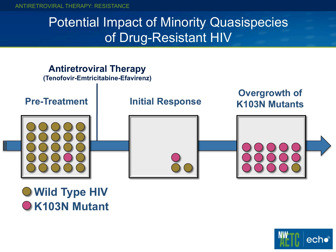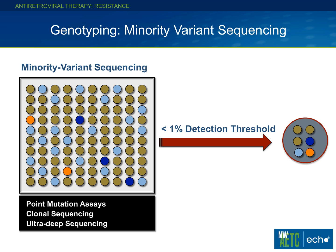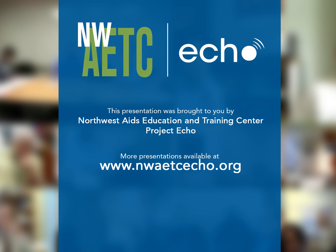Over time, a minority variant that wasn't evident on a genotype could become more dominant. There's a concept now being discussed — minority variant sequencing, essentially an ultra-sensitive genotype — that detects variants all the way down to 1%. We don't have that on a widespread basis now, but we may someday. We don't yet know the clinical relevance, but if you hear the term minority variant sequencing, you'll now have a sense of what it means.